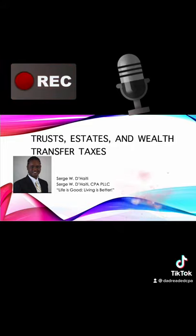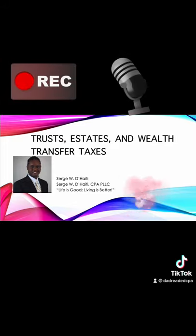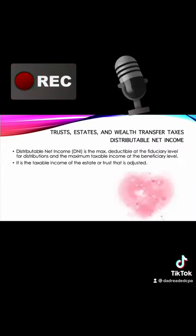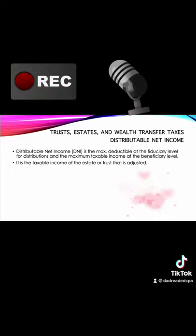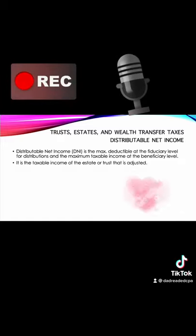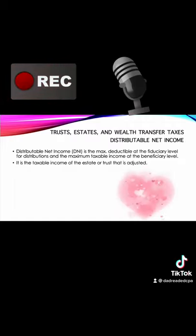In our last video I was going over distributions from Trusts and Estates, and the two main items were regular distributions and distributable net income. In this video I'm going to continue with distributable net income, which is the maximum amount of deductible distributions that the trust or estate can make to the beneficiaries — and therefore, on the receiving end, the maximum taxable income that the beneficiaries can receive from the trust or estate.